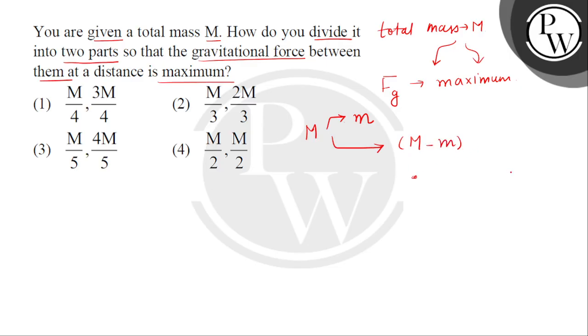Now, we separate them at a particular distance, small r. So, this is small m and another mass is M minus small m.